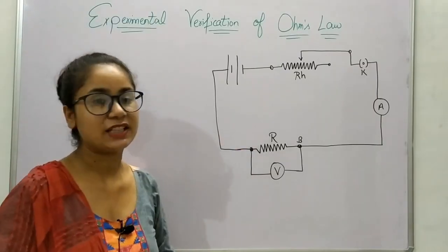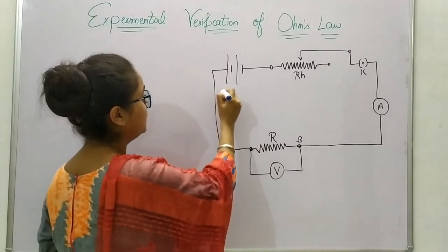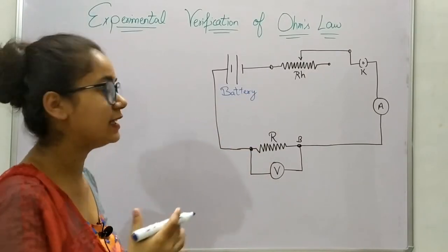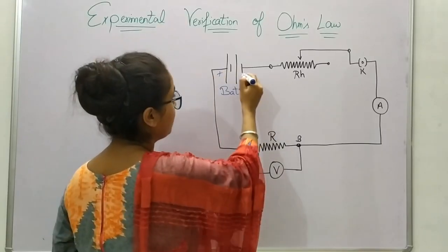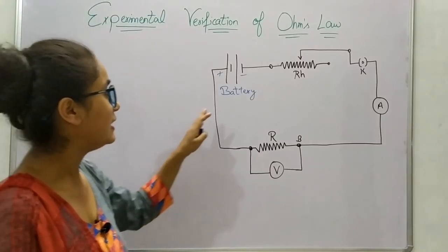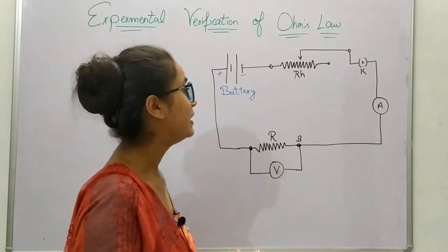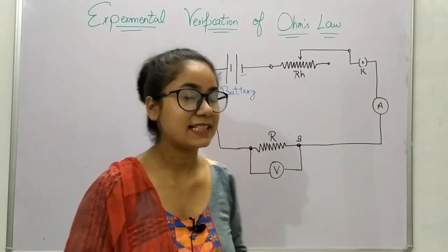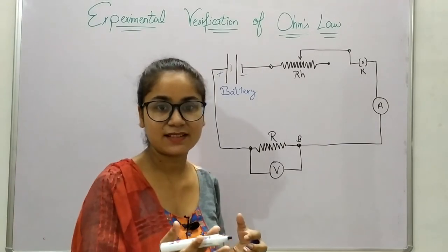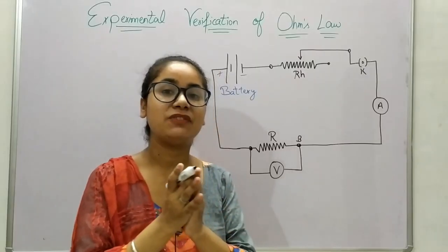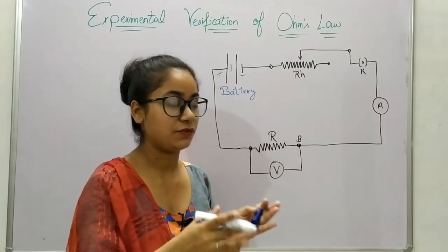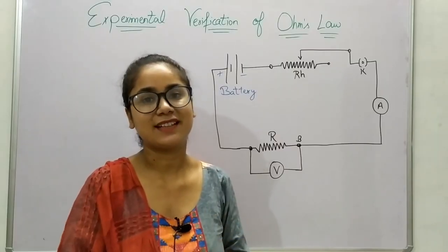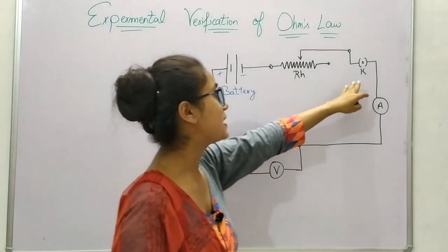These components will help us to know better about Ohm's law. Let's get started with the battery. The battery is used to draw current in the electric circuit. Here is the positive terminal of the battery and here is the negative terminal. Then comes the rheostat, which is a kind of variable resistance. We can change the resistance, which will result in a varied amount of current.